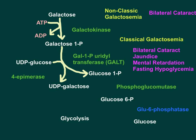Your galactose is now in the form of UDP-galactose. UDP-galactose is converted to UDP-glucose by the 4-epimerase enzyme — this is a reversible reaction. In lactating mammary glands, UDP-glucose can combine with galactose to make lactose. Lactating mammary glands therefore need 4-prime epimerase function, because with it, UDP-glucose can be converted to UDP-galactose for lactose synthesis.